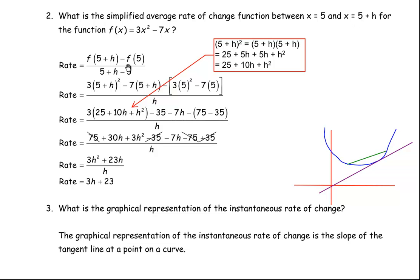Very similar to the first one. The rate is a function value minus a function value, or y2 minus y1 over x2 minus x1. So f(5+h): we put 5 plus h in place of x, giving 3 times (5+h) squared minus 7 times (5+h). For f(5), we put 5 in: 3 times 5 squared minus 7 times 5. And 5 plus h minus 5 simplifies to just h because the 5 and minus 5 add to 0.